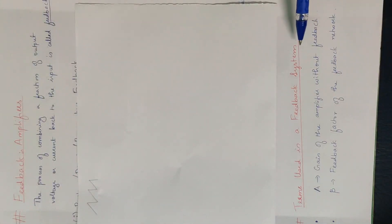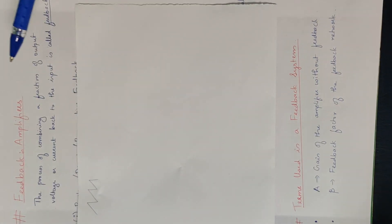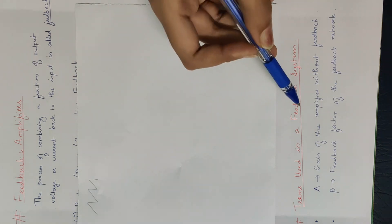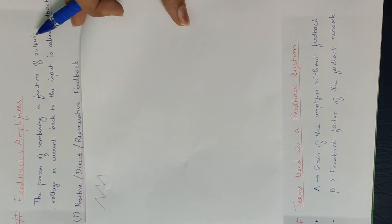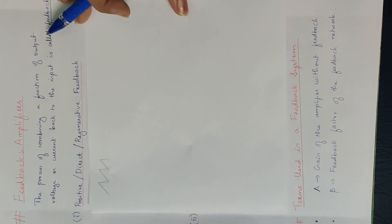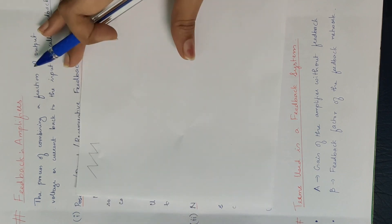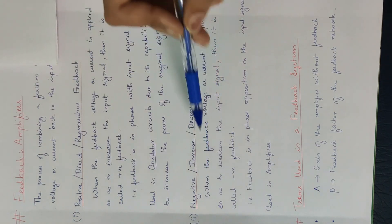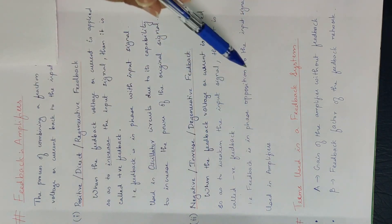What are the terms used in a feedback system? We call feedback in amplifiers. When we use feedback in the amplifier, we study the effect. We will study the common terms in the feedback system. The feedback can be positive feedback or negative feedback. When we use feedback as an amplifier, it results in positive feedback or negative feedback.